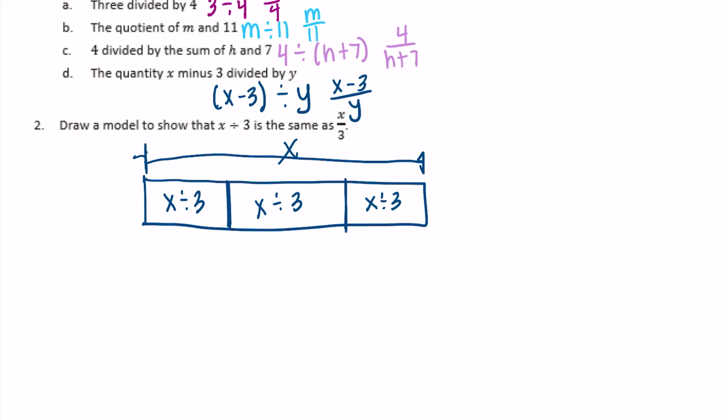So two different ways to kind of visualize that. x over 3 is the same as 1/3 x because if we did 1/3 times x we'd have x over 1 which is equal to x over 3. So you can look at it through this equation too because 1/3 times x is equal to x over 3.